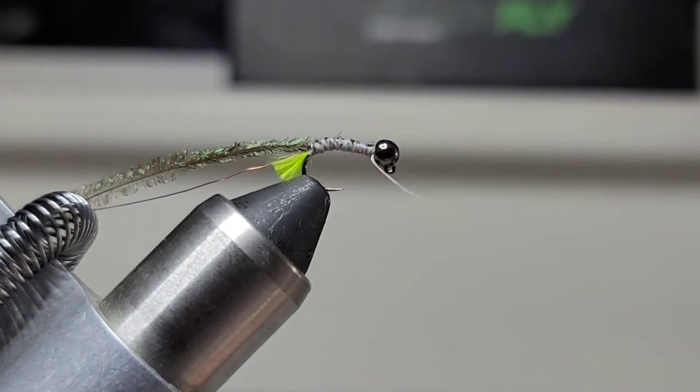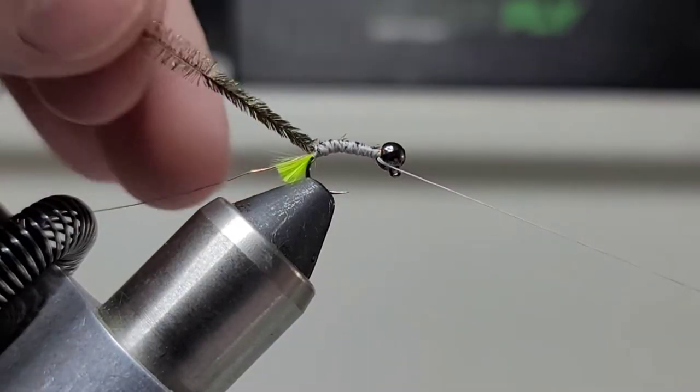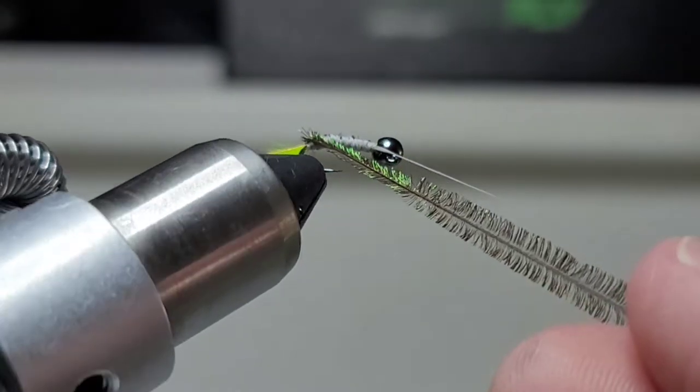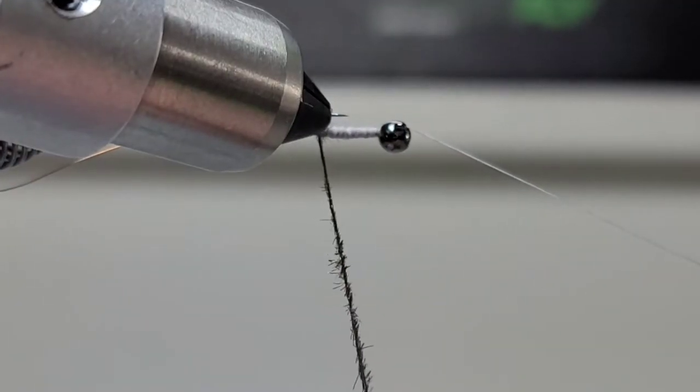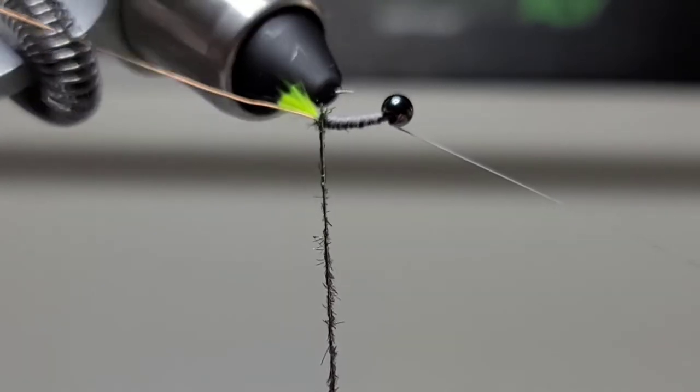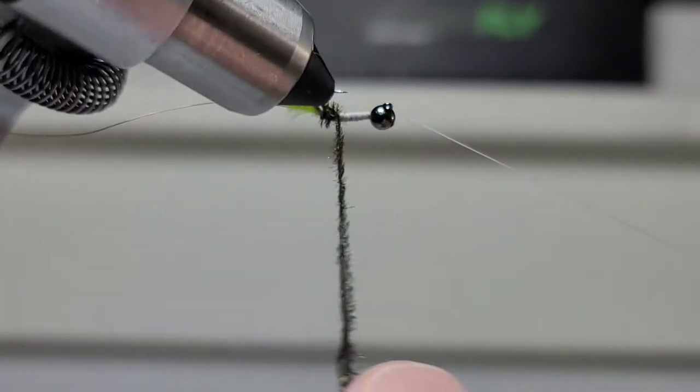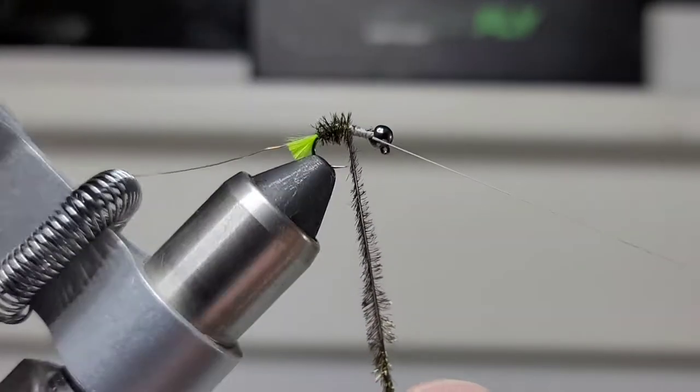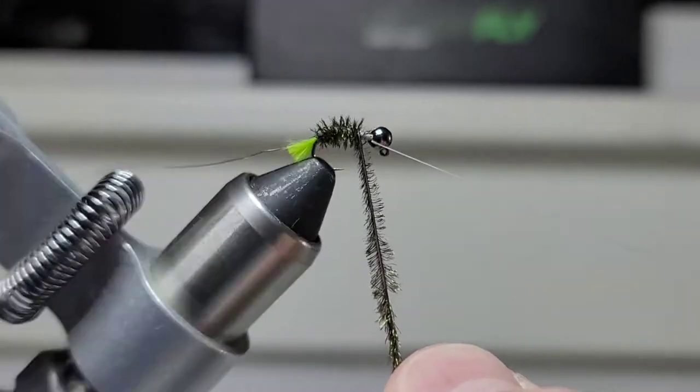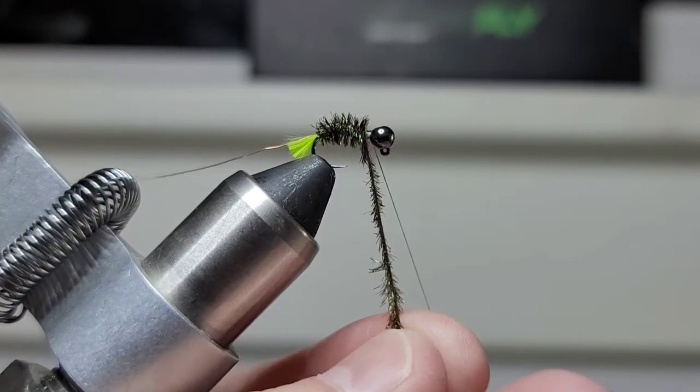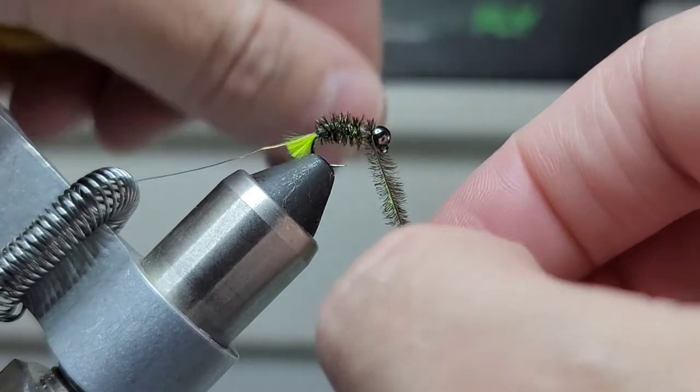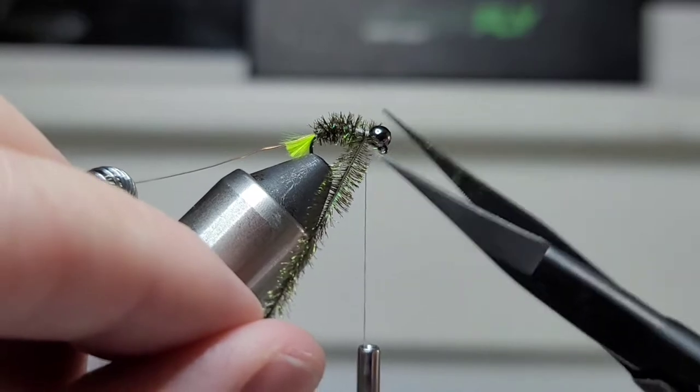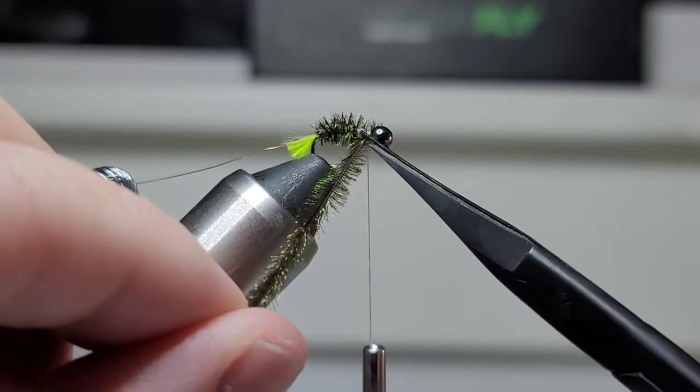The only reason I do an overhand is because when I use the rotary vise, I don't want the thread unwinding. So I'm going to carefully keep this as straight as possible. Carefully capture that. That should be good. Hopefully my hand wasn't in the way.